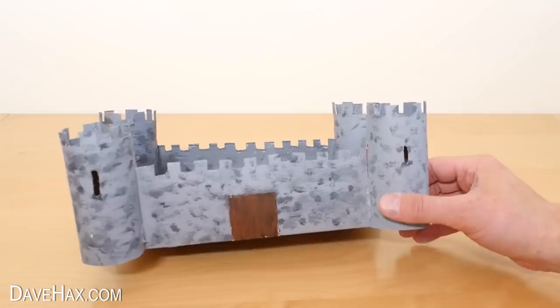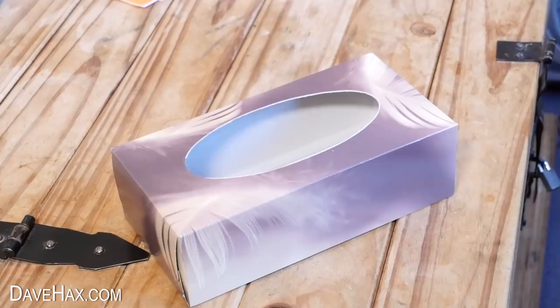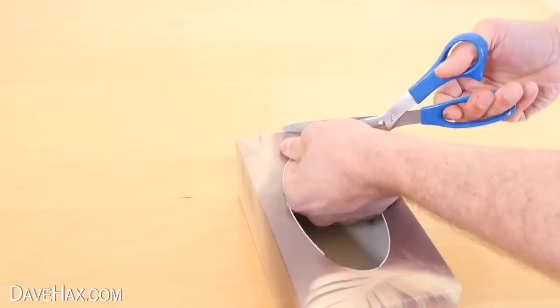Today I'm going to show you how to make this really cool, relatively quick and simple toy castle. We're going to need an empty tissue box like this and we'll start by cutting the top off.